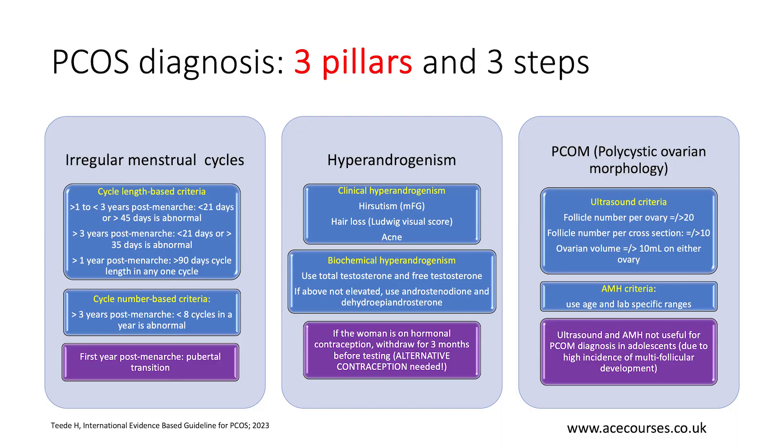The new international guidelines on polycystic ovary syndrome have introduced an additional criterion for PCOM based on the hormone AMH. AMH is produced by the antral follicles, so high AMH levels serve as an indirect marker of a high antral follicle count. Importantly, both ultrasound and AMH are not useful for diagnosing polycystic ovarian morphology in adolescent girls, because these values tend to be high in young girls normally.